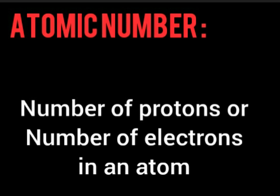The atomic number is nothing but the number of protons, or the number of electrons. In one atom, the number of protons and the number of electrons is the same for a given element. So atomic number is defined as the number of protons or electrons in an atom.